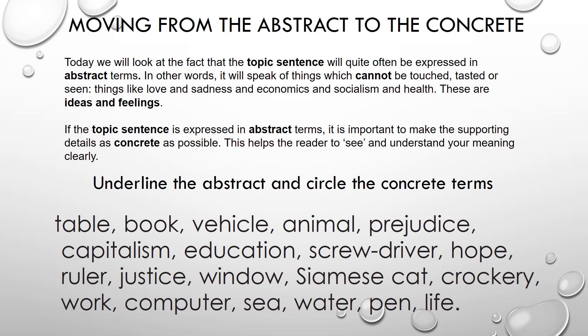Moving from the abstract to the concrete. Today we will look at the fact that the topic sentence will quite often be expressed in abstract terms. In other words, it will speak of things which cannot be touched, tasted or seen — things like love and sadness, and economics and socialism and health. These are ideas and feelings. If the topic sentence is expressed in abstract terms, it is important to make sure that the supporting details are as concrete as possible. This helps the reader to see and understand your meaning clearly. Below is a list of abstract and concrete terms. Choose a few and underline the abstract and circle the concrete terms and compare your answers with the ones that follow.